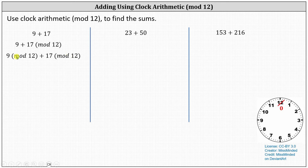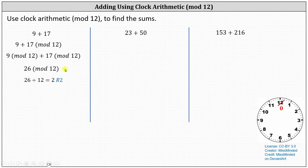We add 9 and 17, which gives us 26 mod 12. 26 mod 12 is equal to the remainder when 26 is divided by 12. 26 divided by 12 equals 2 with a remainder of 2. Because the remainder is 2, 26 mod 12 equals 2, and therefore the final answer is 2.